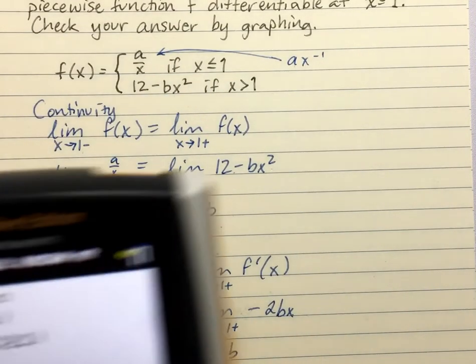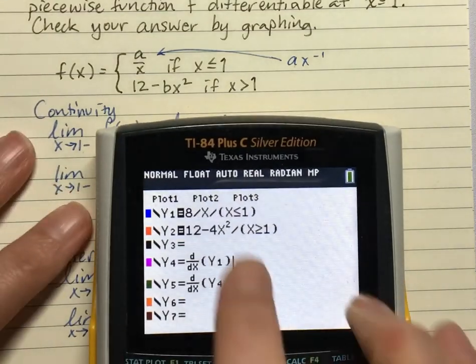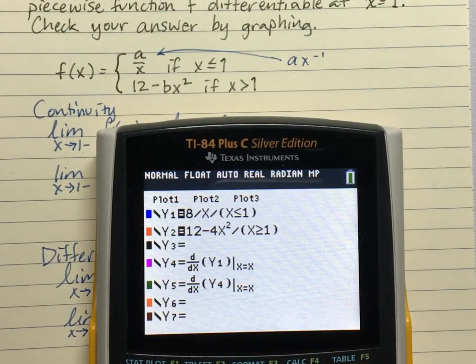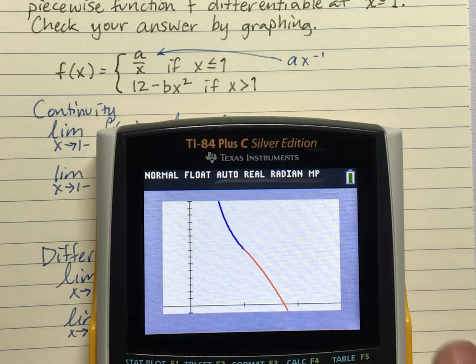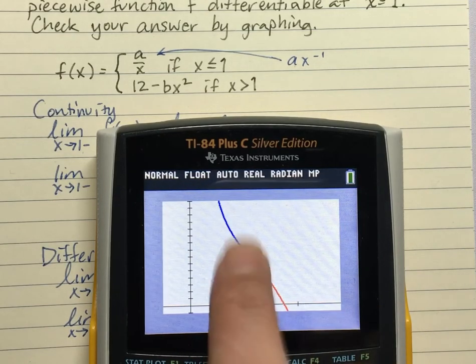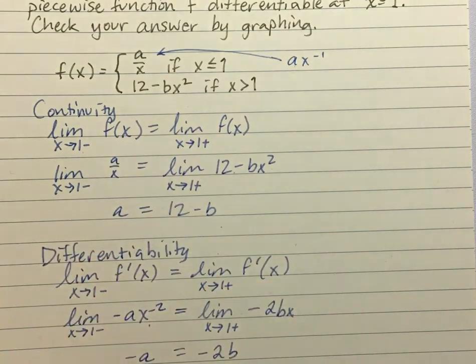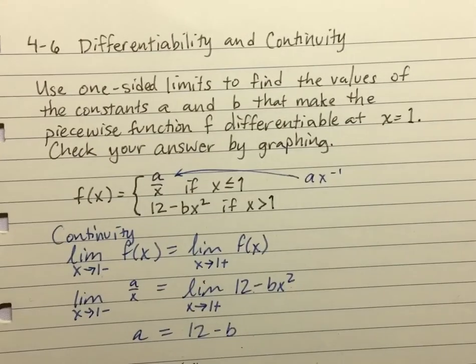So here's our a and our b that hopefully make this function continuous and differentiable. So I put this into my y equals and did the divide by x less than or equal to 1. Check out the piecewise functions video if you don't remember how to do that. And I've already set my window up to make things nice. So here I am. It looks continuous. It looks smooth. So it looks like I've been successful. That is making differentiability happen and continuity as well for a piecewise function.